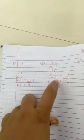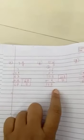15 2/7: multiply 15 into 7. 15 sevens are 105. Add numerator that is 2, so 107. So the improper fraction will be 107 upon 7.